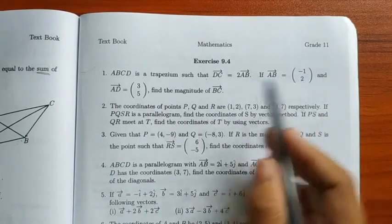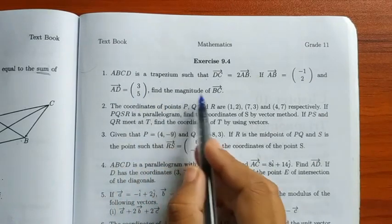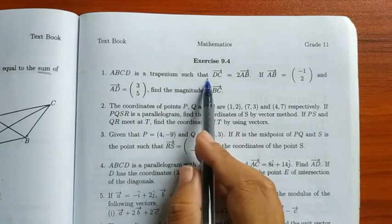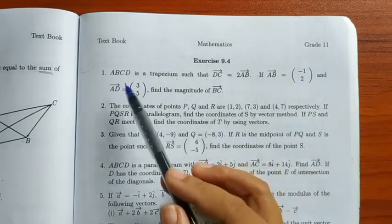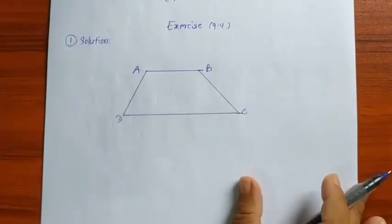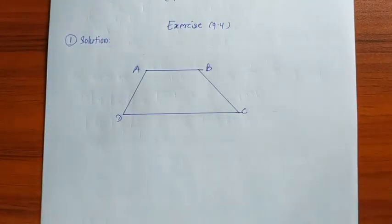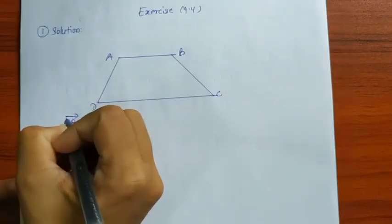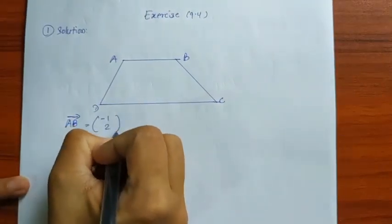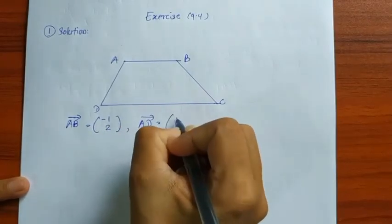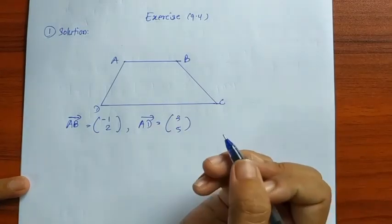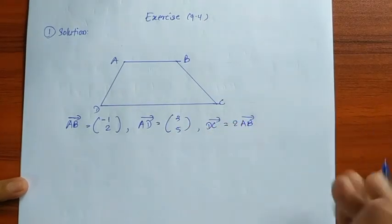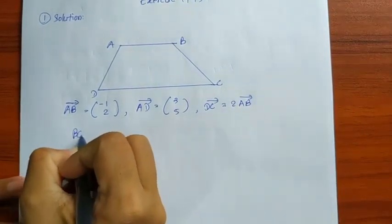Find the magnitude of vector BC. ABCD is a trapezoid. Vector AB is equal to negative 1, 2. Vector AD is equal to 3, 5. The value of vector DC is equal to 2 times vector AB.